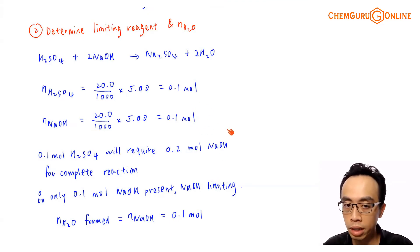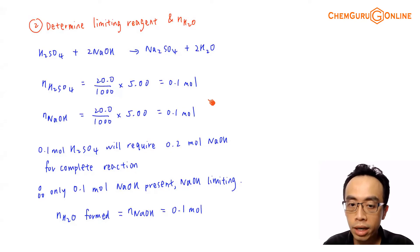Now between these two guys I can determine limiting reagent, so if let's say I'm using 100% of your sulfuric acid, if I'm using 0.1 mole of sulfuric acid, how much sodium hydroxide is required for complete reaction? Based on the mole ratio, mole ratio for sodium hydroxide to sulfuric acid is 2 is to 1. So I actually need double the amount of sodium hydroxide. I need 0.2 moles of NaOH to completely react with all my H2SO4. Obviously I don't have so much. I only have 0.1 mole of sodium hydroxide.